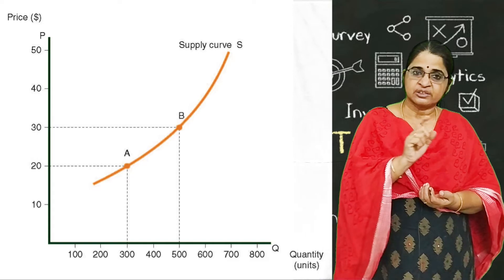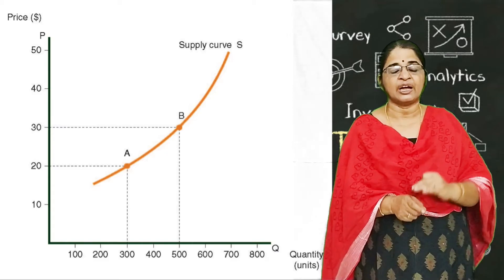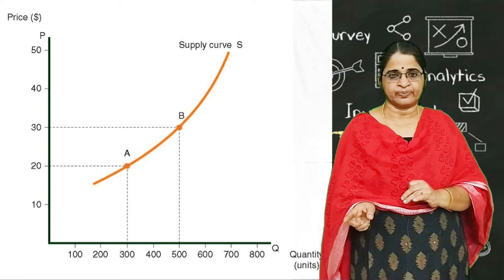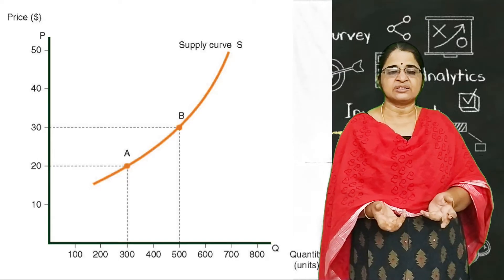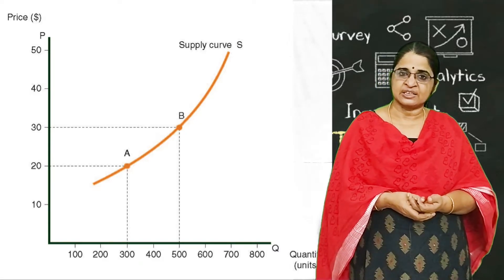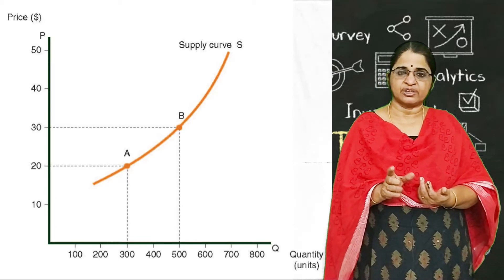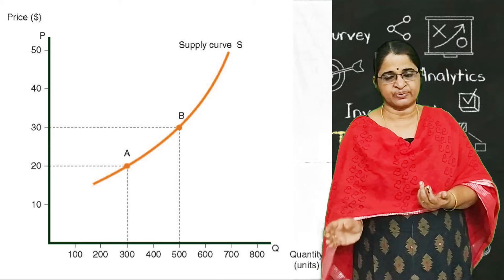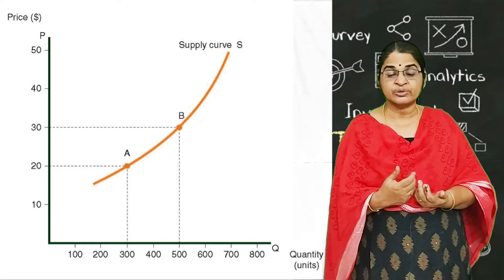The table shows price, quantity supplied by seller A, quantity supplied by seller B, and quantity supplied by seller C, and then the market supply. At price 10, seller A supplies 100 units, seller B supplies 50 units, and seller C supplies 200 units. Therefore the market supply at Rs. 10 is equal to 350.